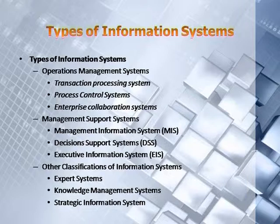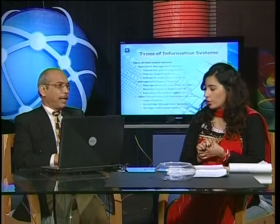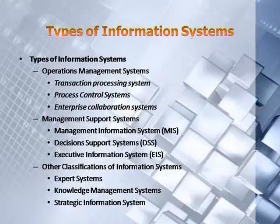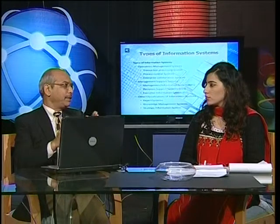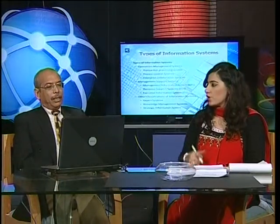The third category includes expert systems, knowledge management systems, and strategic information systems. In expert systems, you feed the knowledge of an expert — a doctor, engineer, or instructor — into the computer, and then you input symptoms of a disease and the computer tells you what it is. Knowledge management systems let you feed knowledge into the computer and it replies to your various questions, like frequently asked questions in software. Strategic systems provide strategic decisions to help you compete against your competitors.